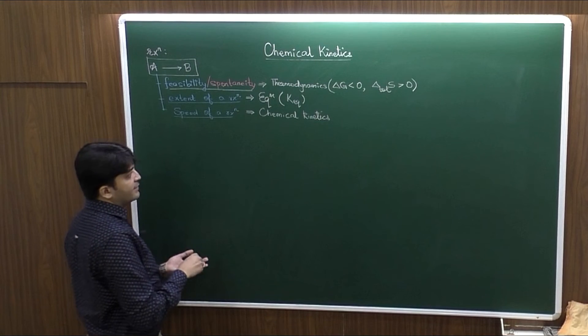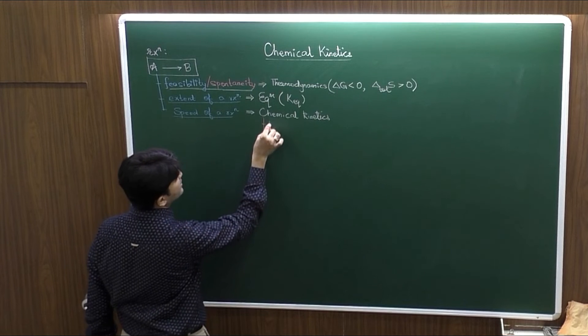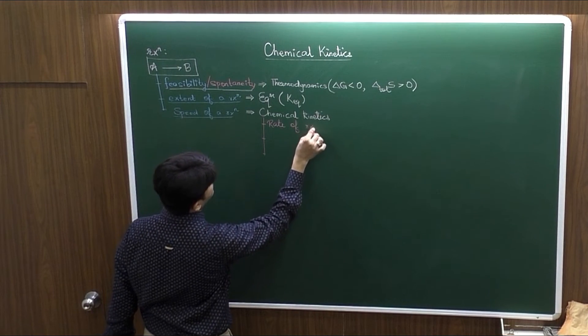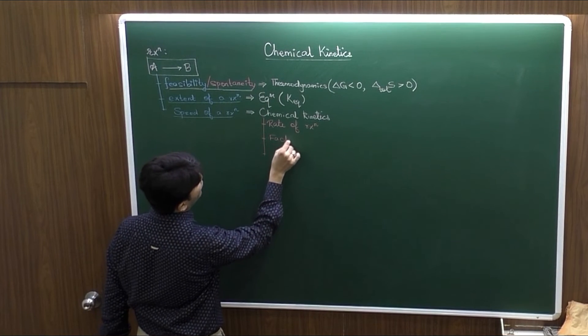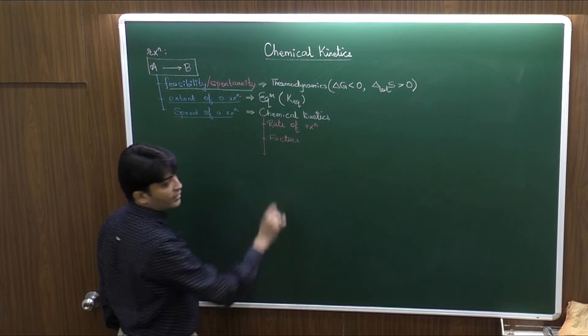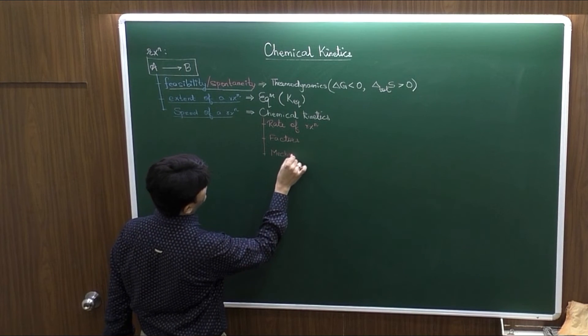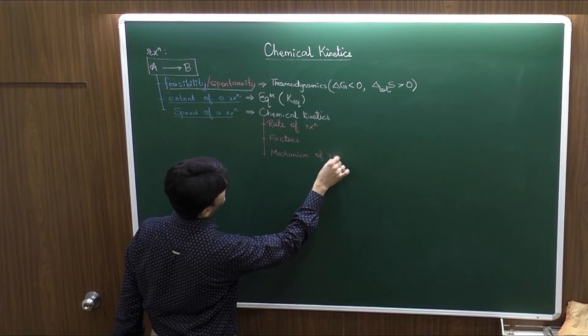Chemical kinetics or in this chapter, we are going to talk about three major things. First, how to calculate the rate of reaction. Second, the factors which could influence the rate of reaction. And thirdly, a very important part that is mechanism, the working of any reaction.